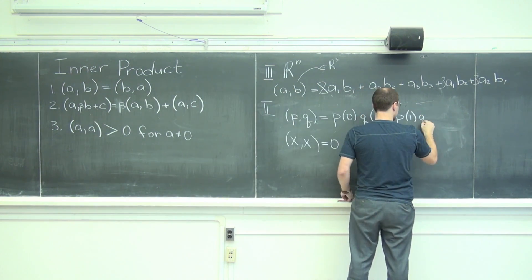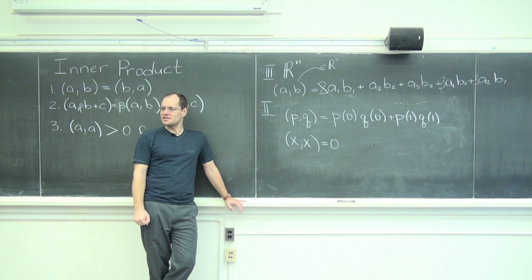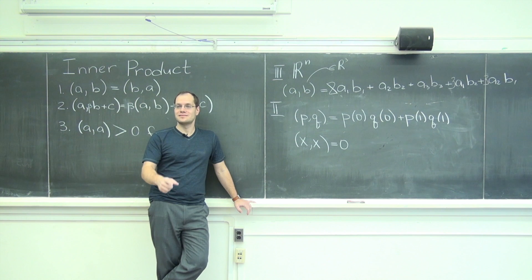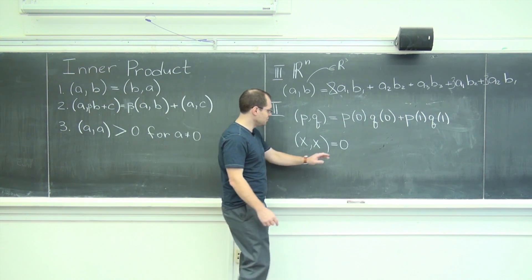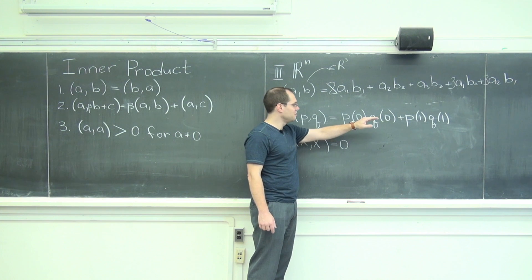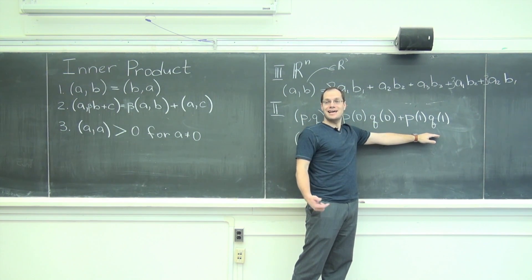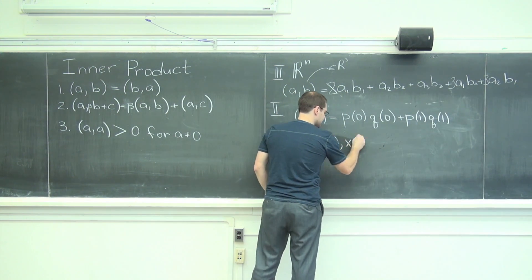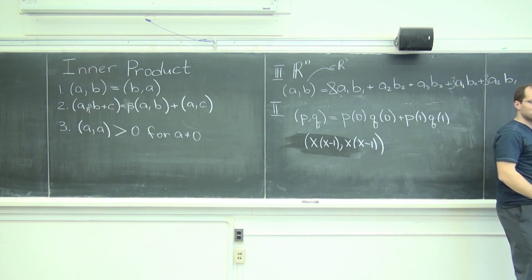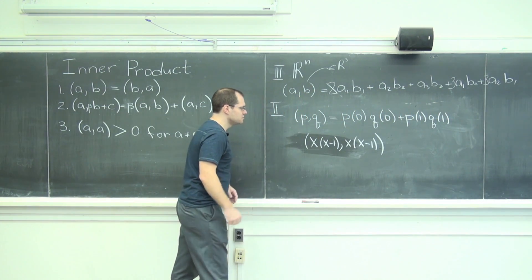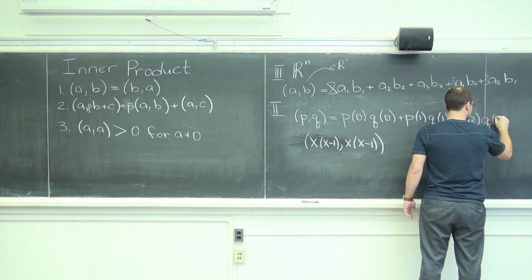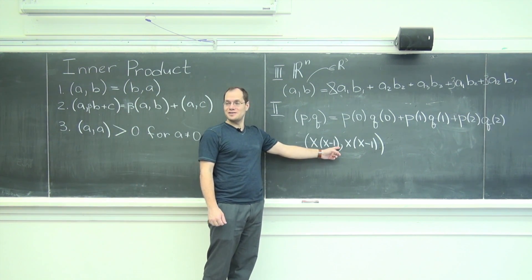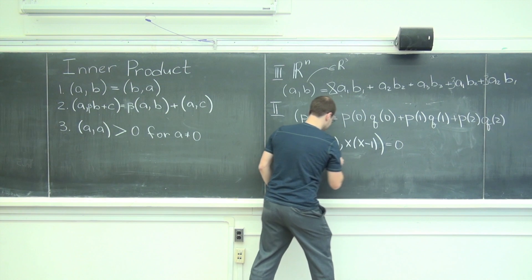So I'll fix it. X squared minus X — where did that come from? You look for something inspired by this: something that would have zero here and zero here, so X times X minus one. According to this attempted inner product, that dotted with itself is zero. I'll fix it — but no, because you can throw in times X minus two as well. So we can't fix it.